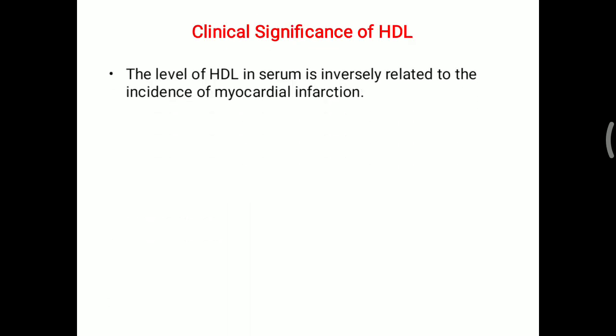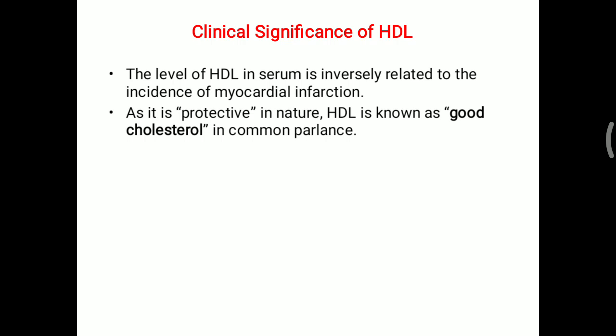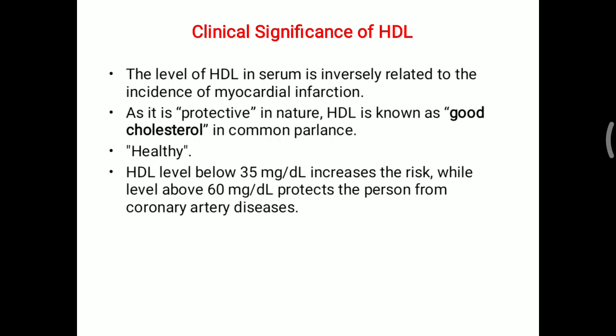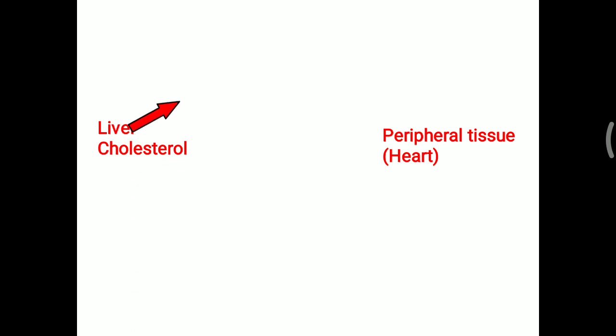The clinical significance: the level of HDL in serum is inversely related to the incidence of myocardial infarction. A high level of HDL means low chances of myocardial infarction; a low level of HDL means high chances of myocardial infarction. HDL is protective in nature and is considered good cholesterol — 'H for healthy.' An HDL level below 35 mg/dL increases risk; above 60 mg/dL is protective for coronary artery disease.